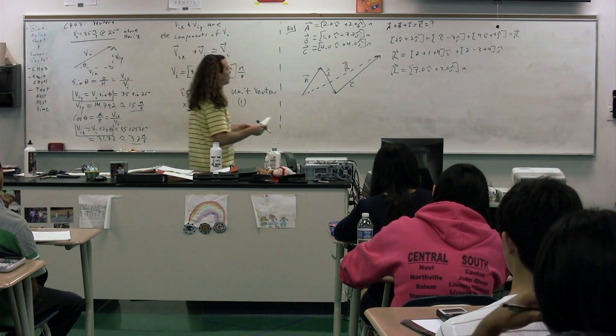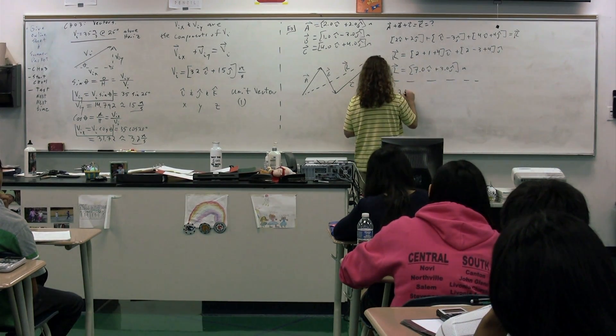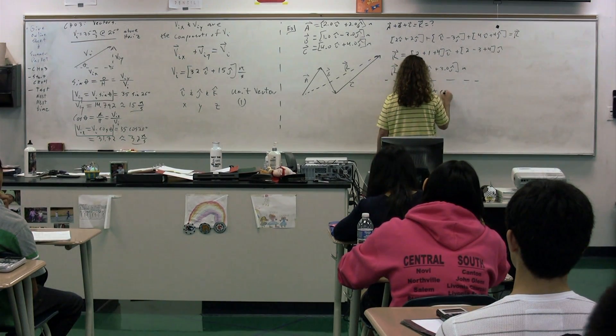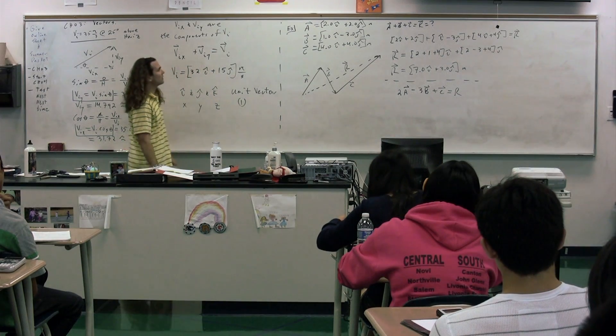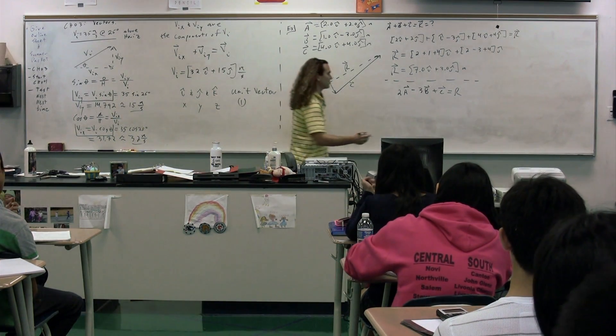You can see, we could do things like, all we did there was A plus B plus C. You could also do things like 2A minus 3B plus C to get to the resultant vector, where you would simply multiply the scalar 2 times the quantity 2i plus 2j, for example, for 2A, and various things like that.